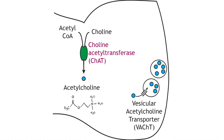Most small molecule neurotransmitters are synthesized by enzymes that are located in the cytoplasm. The exception is norepinephrine, which we will discuss. This means that small molecule neurotransmitters can be synthesized and packaged for storage in the presynaptic terminal using enzymes present in the terminal.